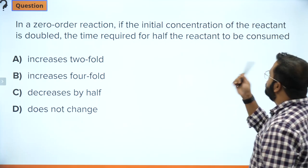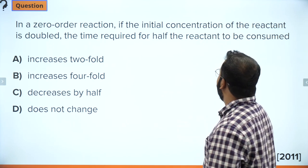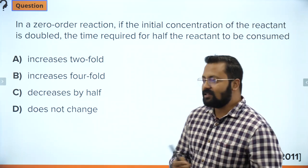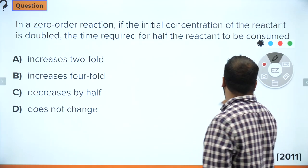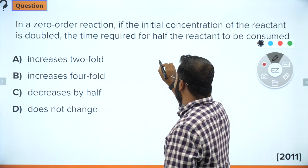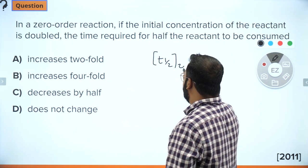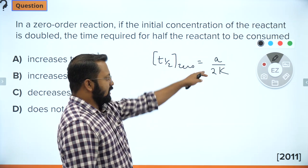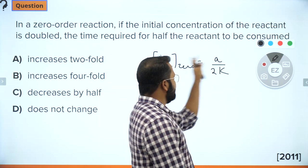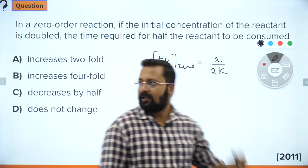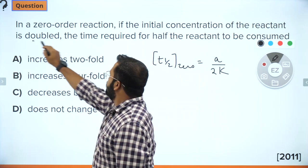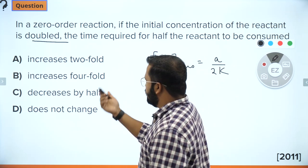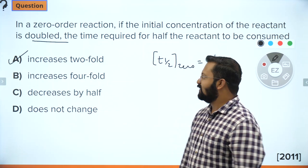For a zero order reaction, t-half equals a/(2k), so t-half is directly proportional to a. If the initial concentration is doubled, t-half will also double. Here, the initial t-half is 0.2 seconds, so doubling the initial concentration gives t-half = 0.4 seconds. The right answer is 0.4 seconds.